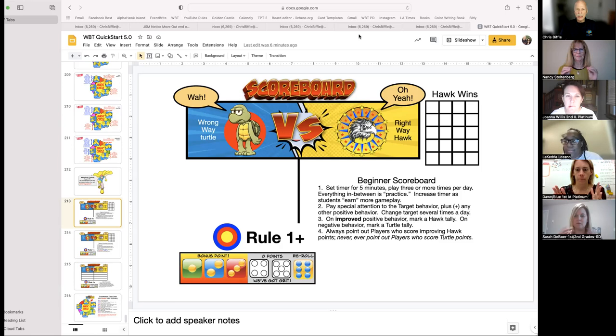You're going to pay special attention to the target behavior, which can be anything you want. Here we want kids to improve on rule one, following directions quickly. And the plus sign means we'll reward you for other things besides rule one. You're looking for improved behavior. When you see positive improvement behavior, you make a tally mark under the hawk side. You point at the class and they go, oh yeah, nice and fast. When you see negative behavior, you don't indicate the kids who are turtling. When you see really improved behavior, then you can roll the dice and that'll give you a bonus point.